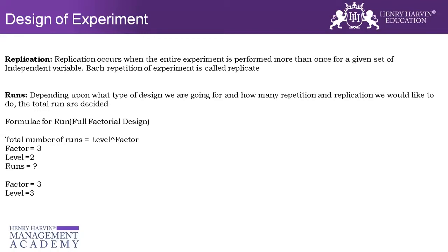The formula for runs is: level to the power of factor. If doing only one replica, it stays the same. If doing two replicas, multiply by two. If three replicas, multiply by three. That is how we calculate the number of runs to do the experiment.